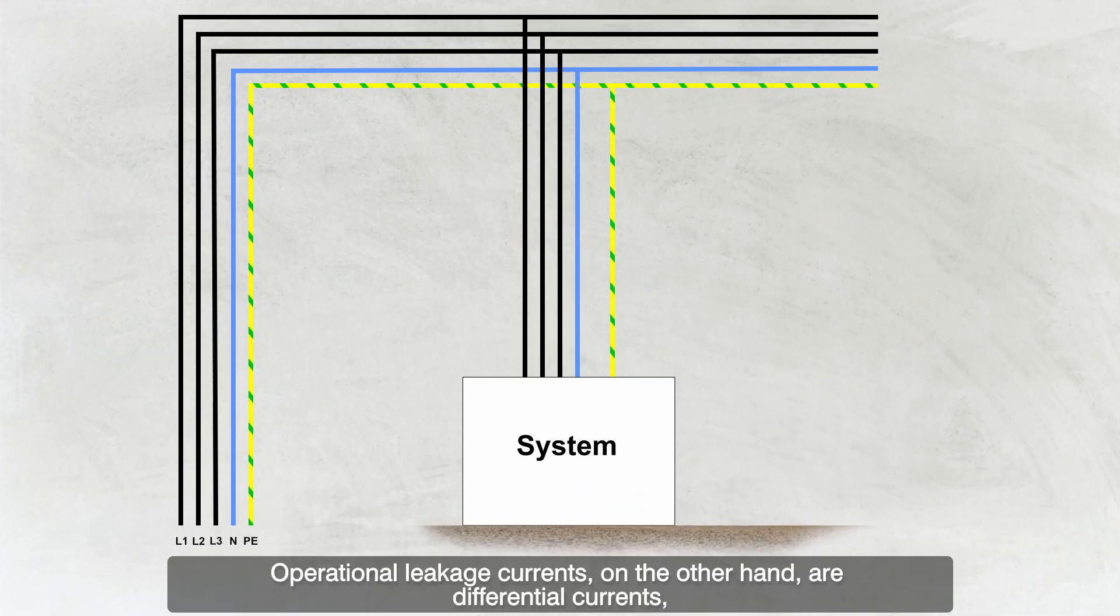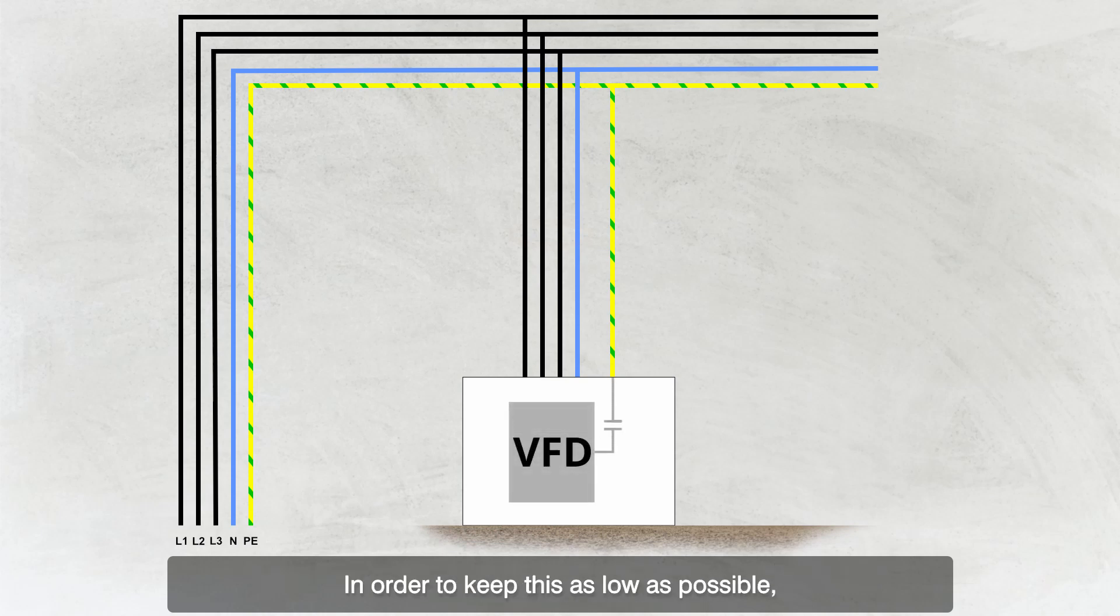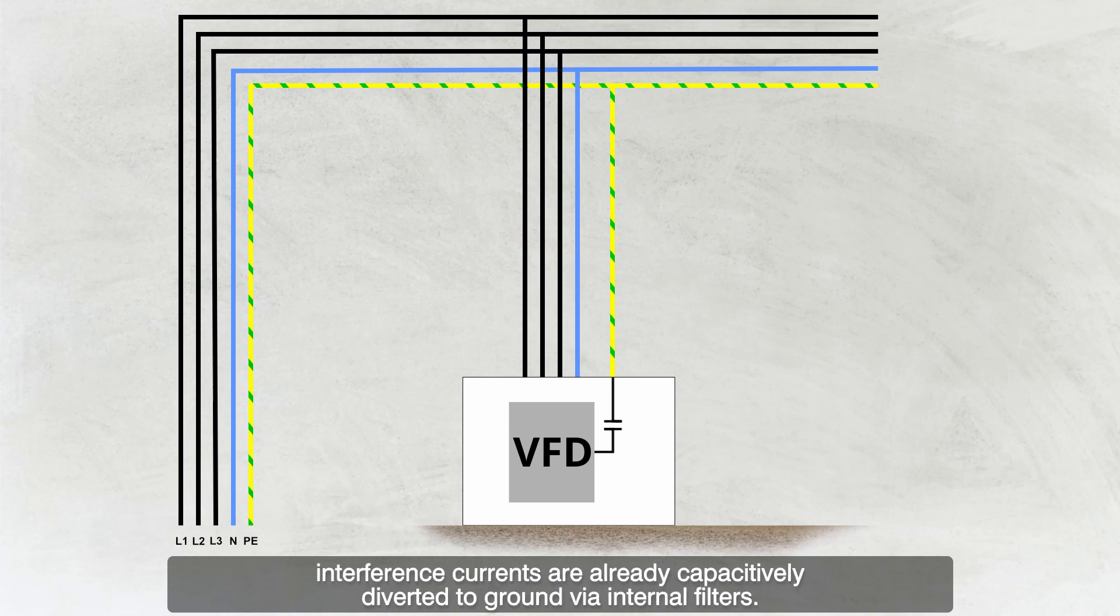Operational leakage currents, on the other hand, are differential currents which flow to earth during normal operation without a fault being present. In order to keep this as low as possible, interference currents are already capacitively diverted to ground via internal filters.